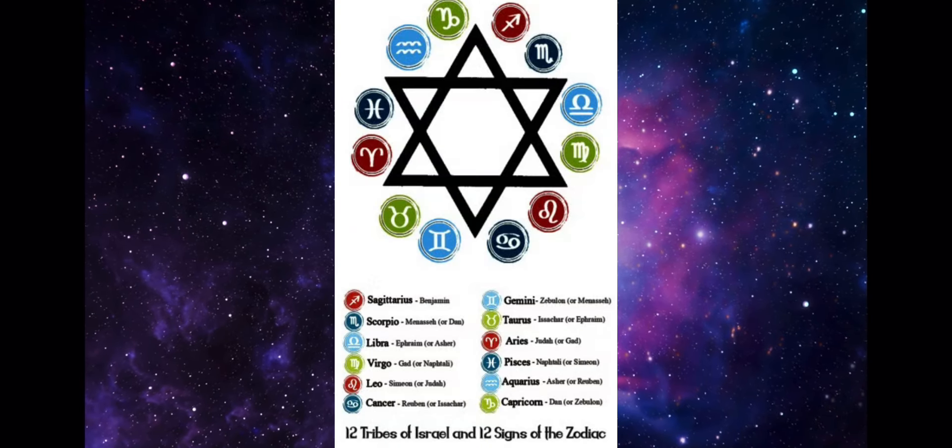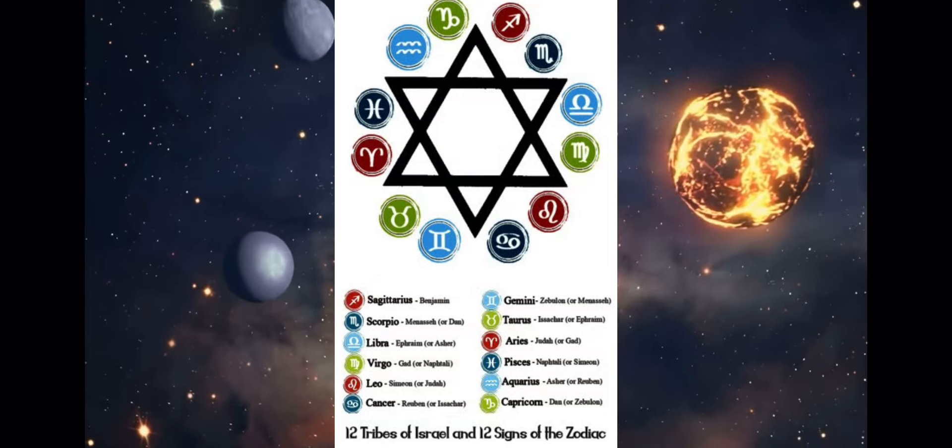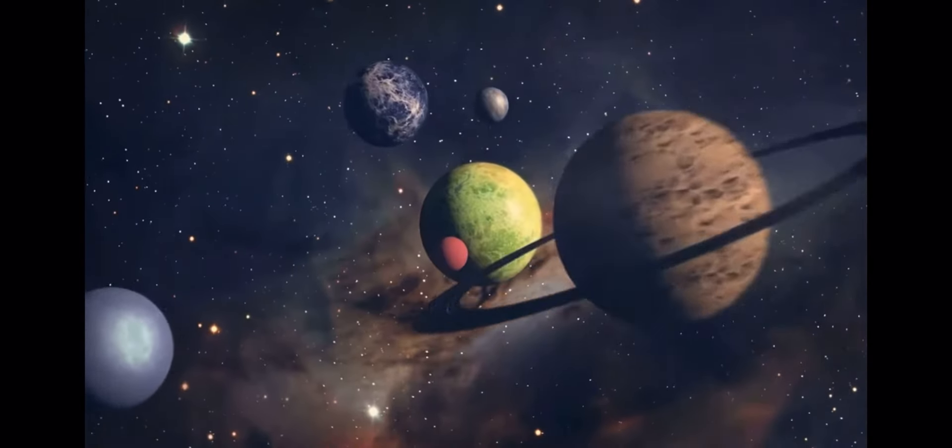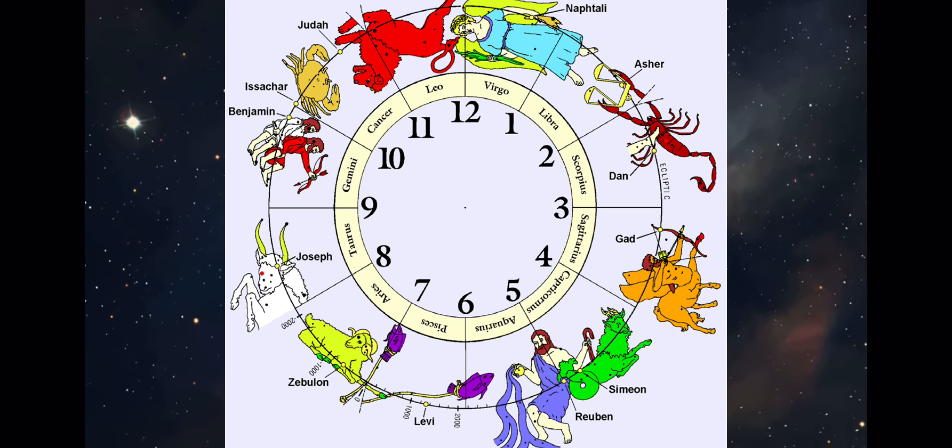Notice how there's 12 tribes of Israel. There's a connection between the 12 houses of the Zodiac and the 12 tribes of Israel. Each tribe of Israel has their house they are connected to for the Zodiac.